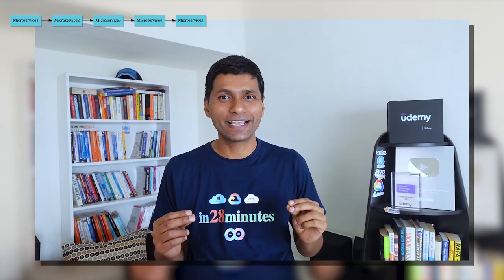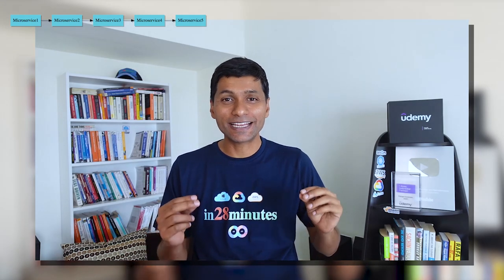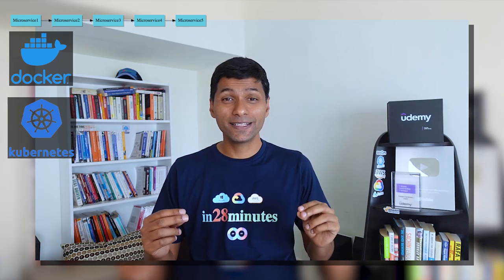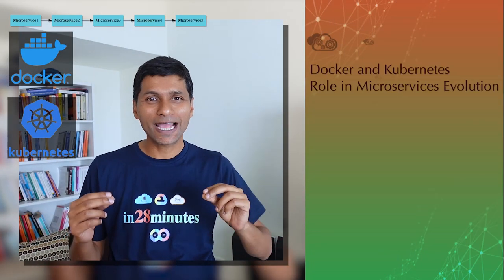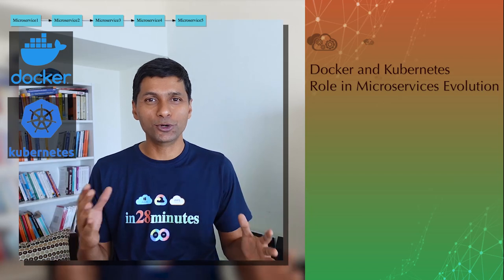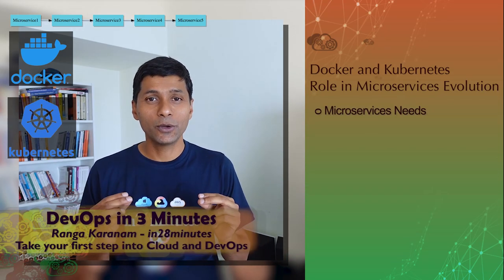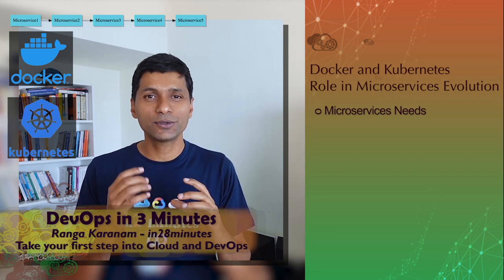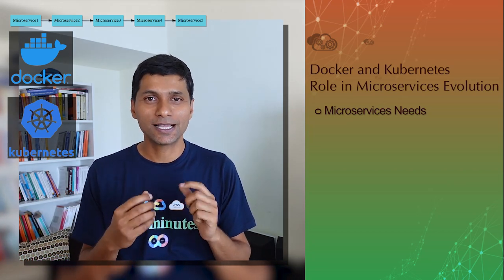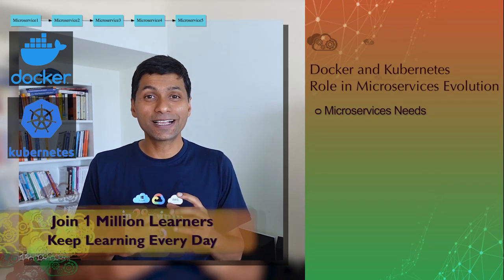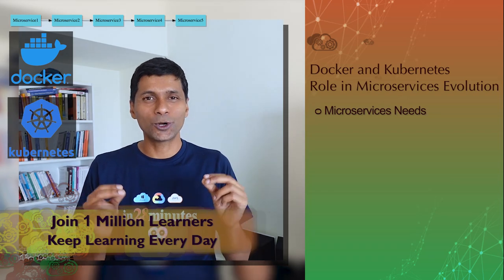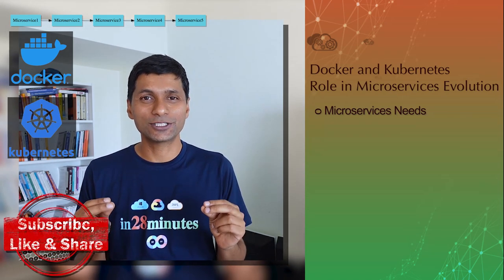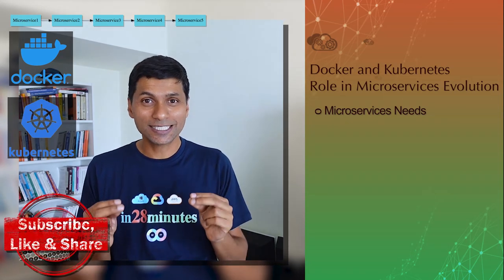Microservices has been one of the most popular architectural patterns in the last decade or so, and containers and container orchestration — Docker and Kubernetes — have played a very important role in this evolution. Going back 10 years, we were talking about large monolith applications. Microservices changed the game by reducing the deployable unit to a small unit, so instead of deploying one large application, we deploy multiple small ones, enabling independent releases and continuous innovation.